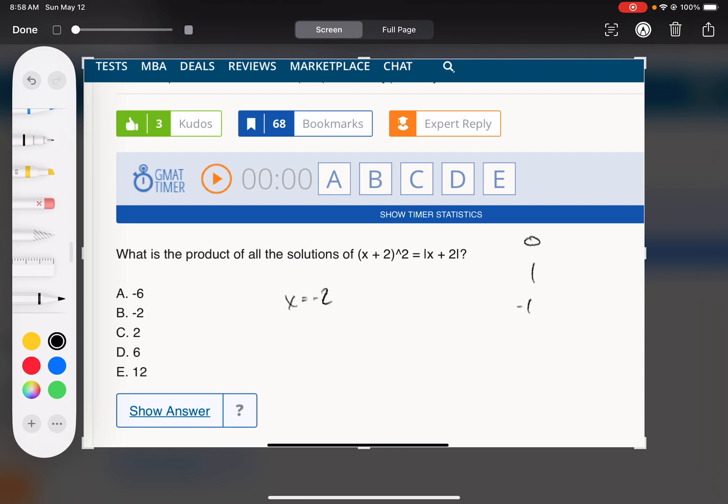We can get these terms to positive one by making x equal to negative one. So that checks out—negative one plus two is one squared equals absolute value one. That's cool.